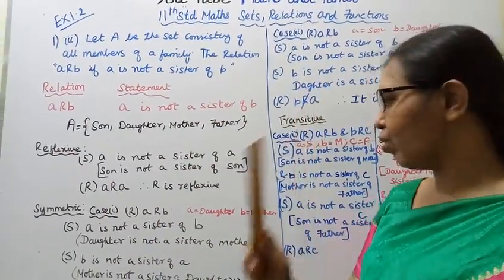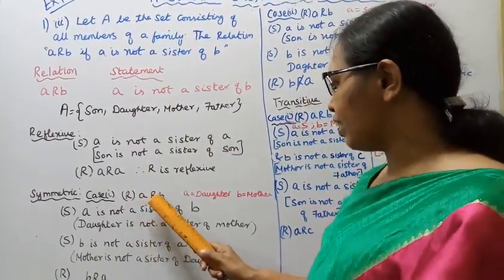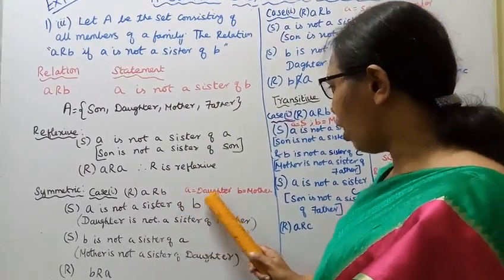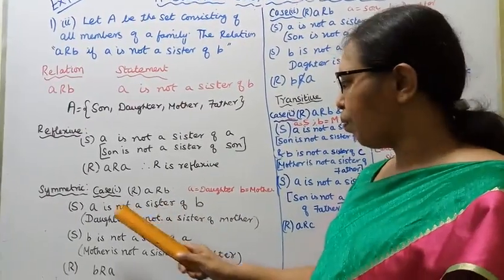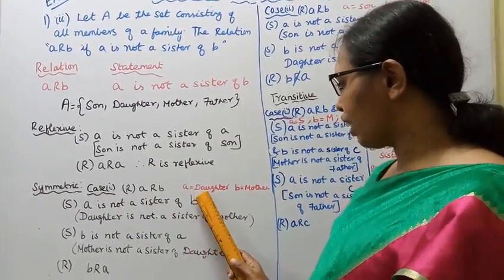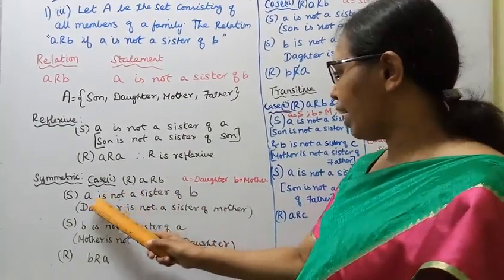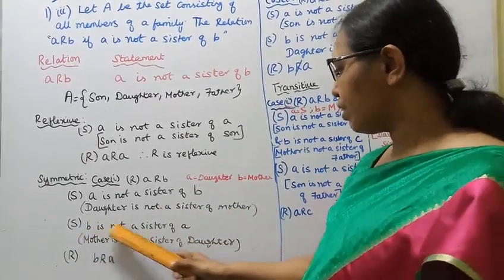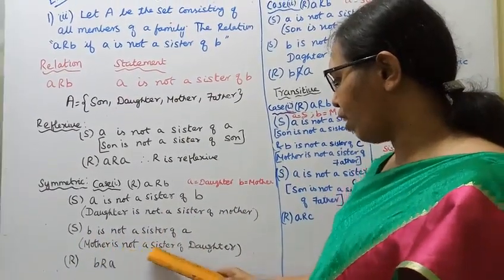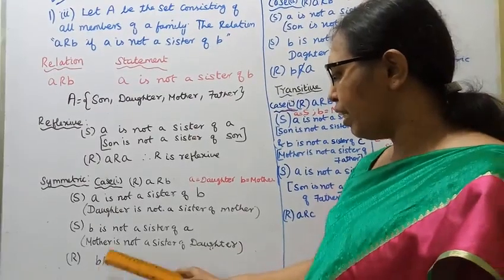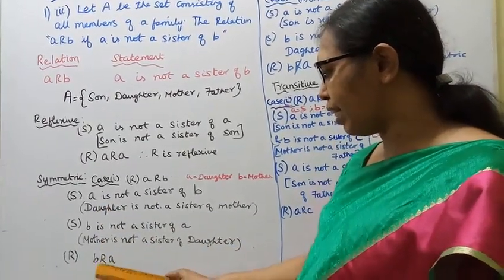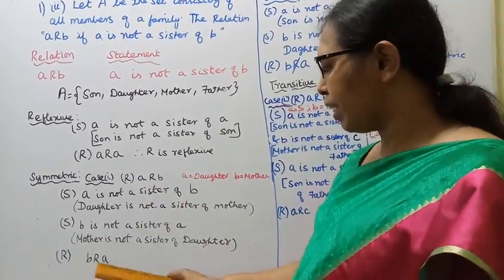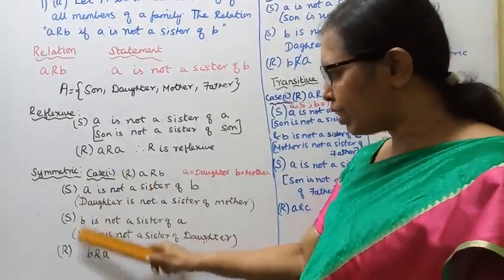For symmetry, Case 1: Let a be daughter and b be mother. Then a is related to b means daughter is not a sister of mother — true. Now checking b related to a: mother is not a sister of daughter — also true. So a related to b implies b related to a. Case 1 shows the relation is symmetric.